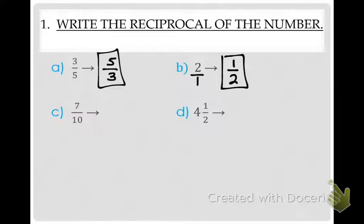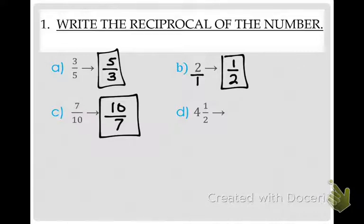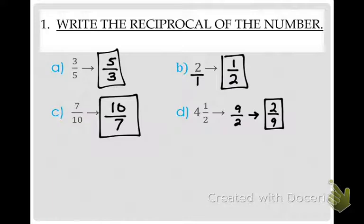Nehemiah, what about 7 tenths? 10 over 7. Now this next one looks different — who can help me out? Charbel, what should I do first? Very good — I've got to turn the mixed number into an improper fraction. What would 4 and a half be as an improper fraction? 9 over 2. If I were to take the reciprocal of 9 over 2, what would that be? 2 over 9 is correct. So that's how you find the reciprocal — today's lesson, we need to know how to flip the fraction.